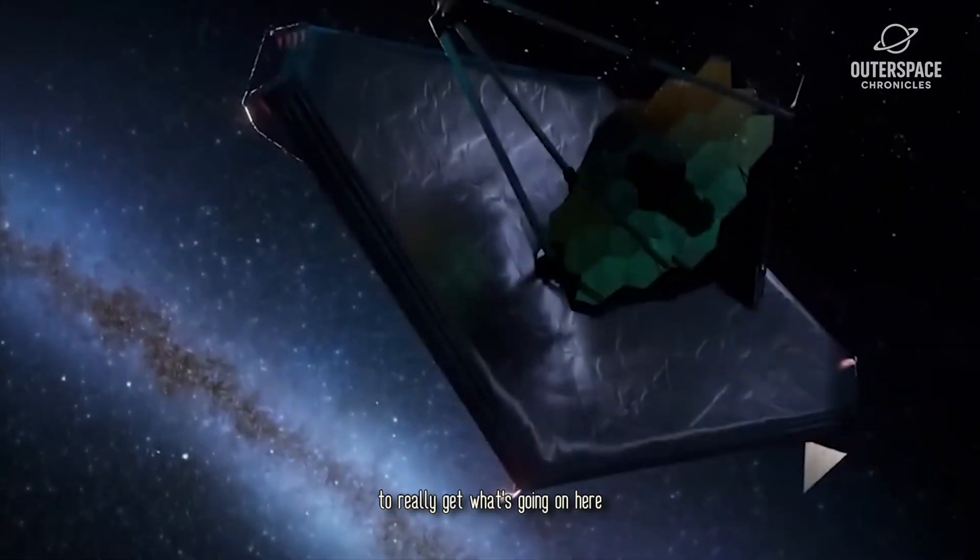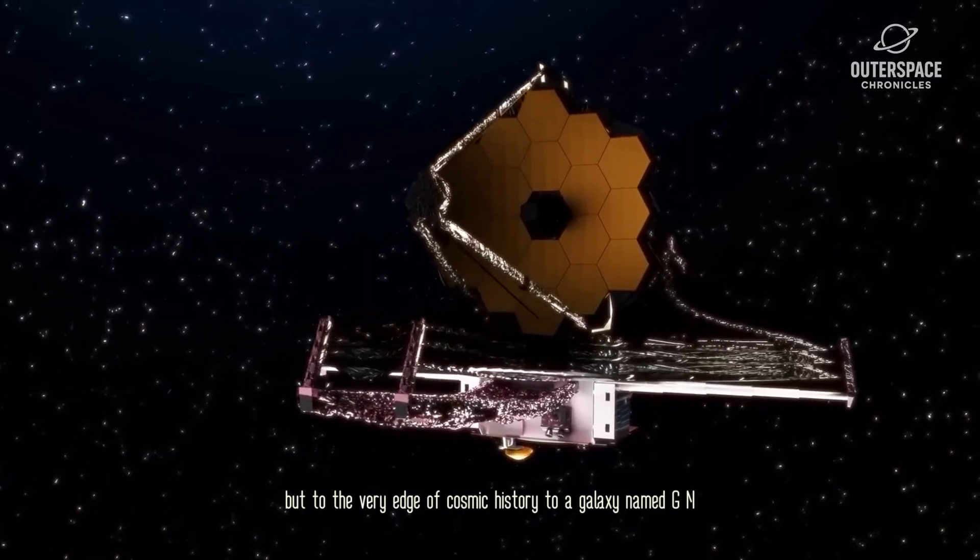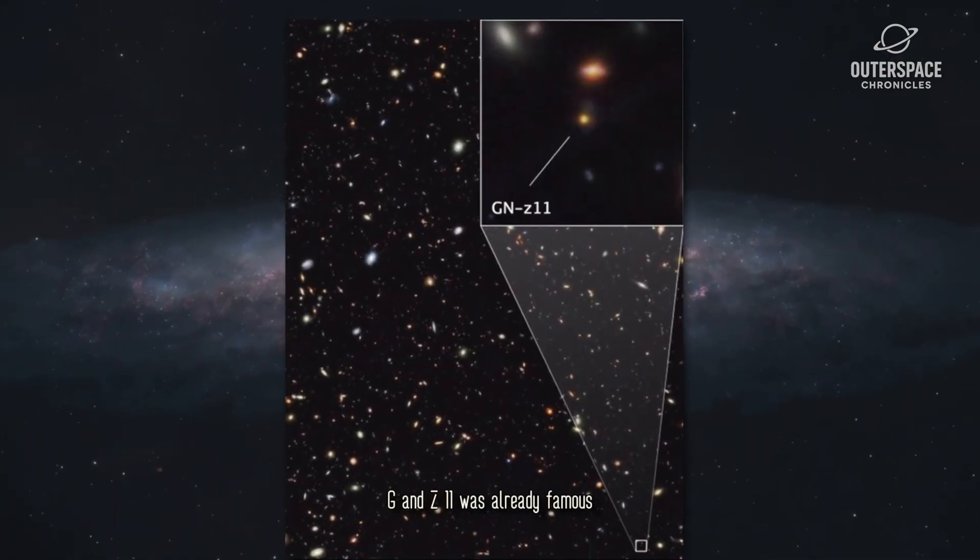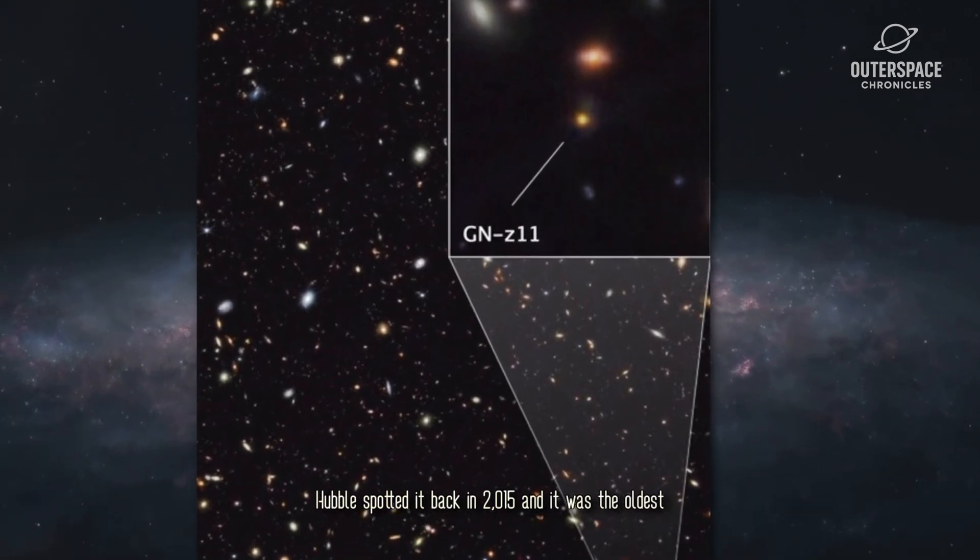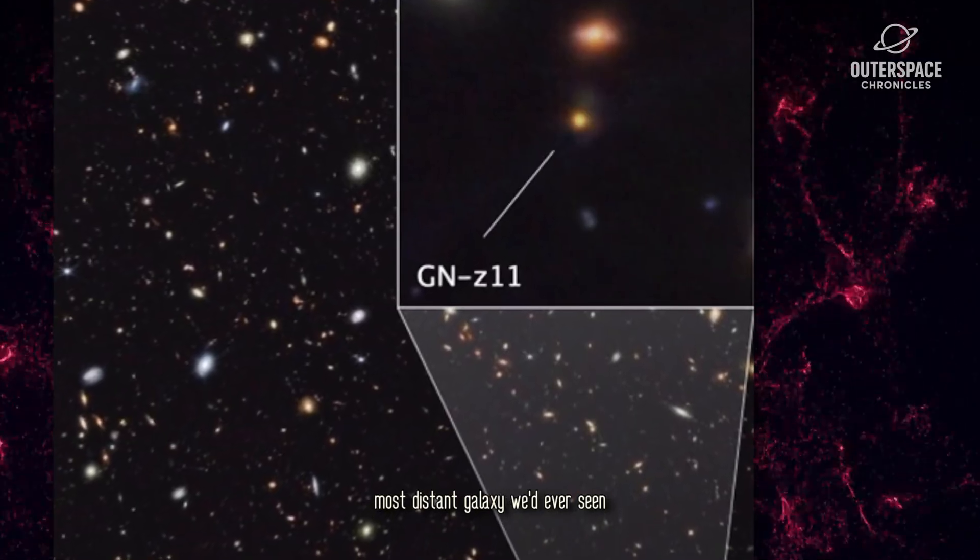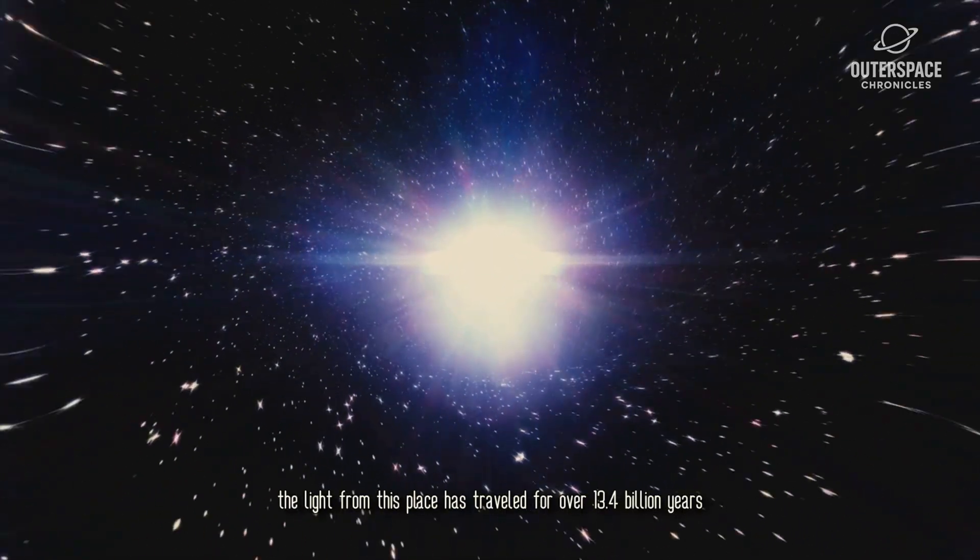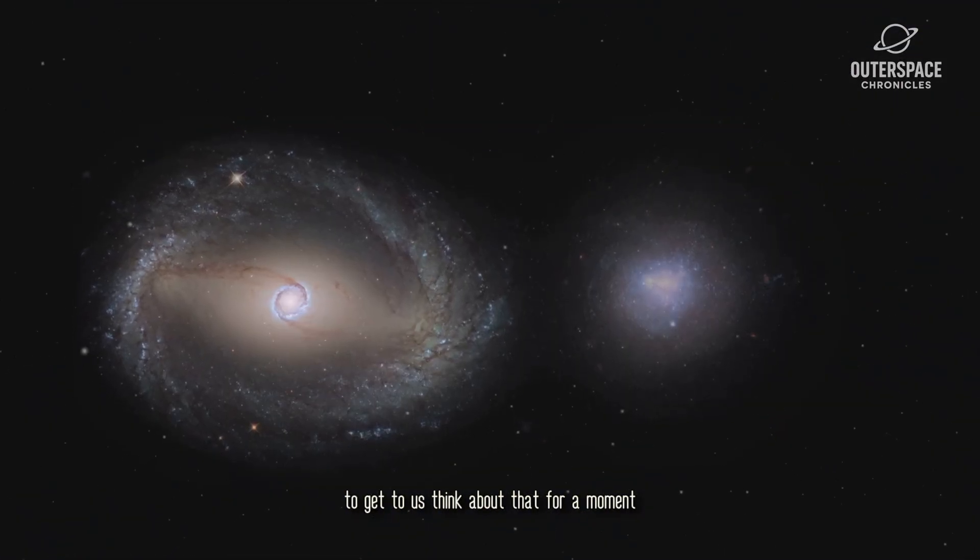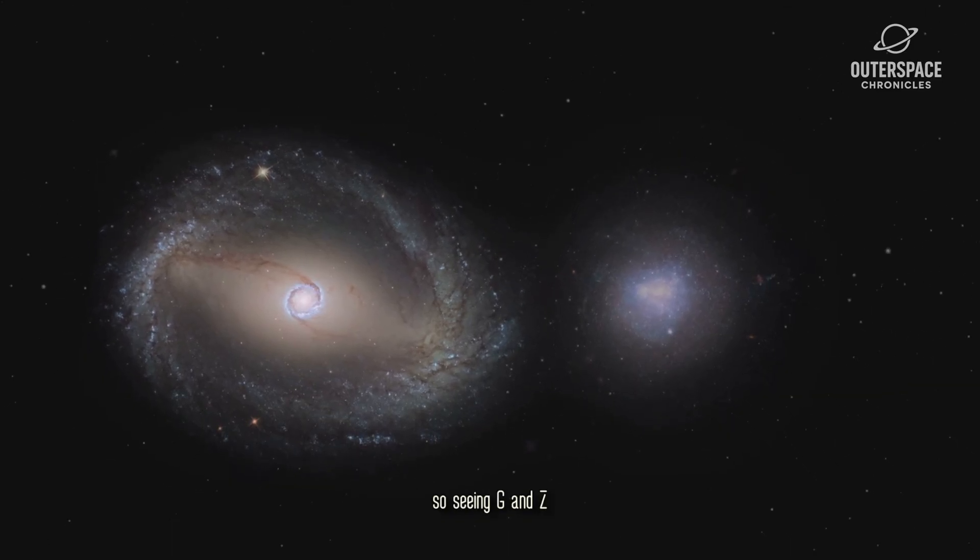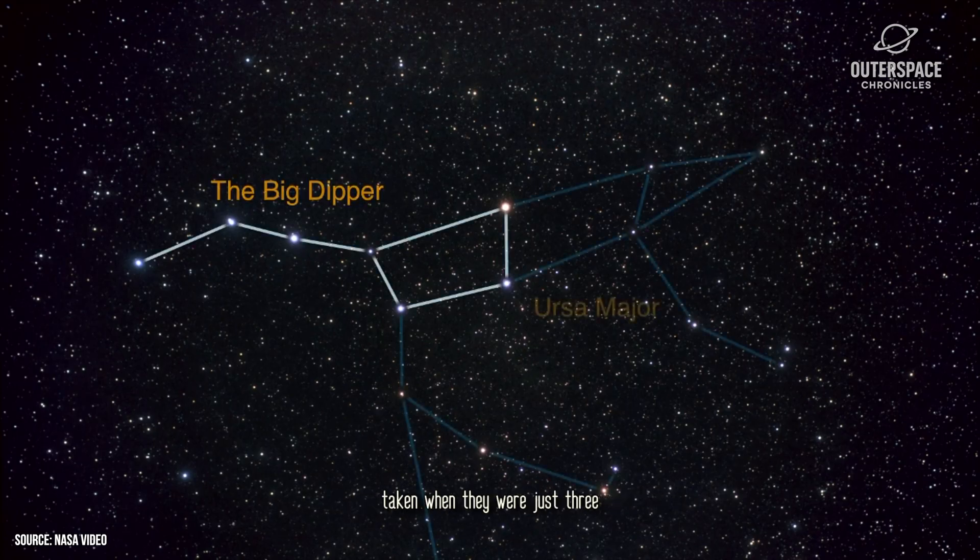To really get what's going on here, we need to go way back, not just a little, but to the very edge of cosmic history, to a galaxy named GNZ 11. Before this, GNZ 11 was already famous. Hubble spotted it back in 2015 and it was the oldest, most distant galaxy we'd ever seen. The light from this place has traveled for over 13.4 billion years to get to us. Think about that for a moment. The universe is 13.8 billion years old. So seeing GNZ 11 is like looking at a picture of a hundred-year-old person taken when they were just three.